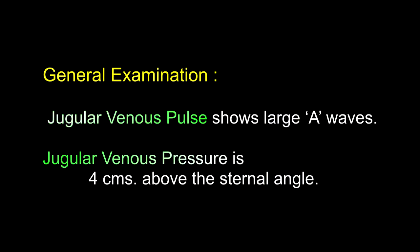How was jugular venous pressure measured? The patient sat reclining with a backrest of 45 degrees, head relaxed and turned slightly to the opposite side. The maximum height to which the column of blood rises was noted, and the vertical distance from the sternal angle was measured — it was 4 cm, slightly more than the normal 3 cm. At 45 degrees, the sternal angle and right atrium are at the same horizontal level, so the height of the blood column from the sternal angle correctly represents the jugular venous pressure.